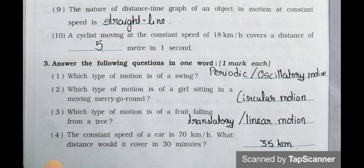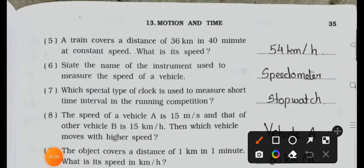Now we will see the next page. Number five: a train covers a distance of 36 kilometer in 40 minutes at constant speed. What is its speed? Answer is 54 kilometer per hour.